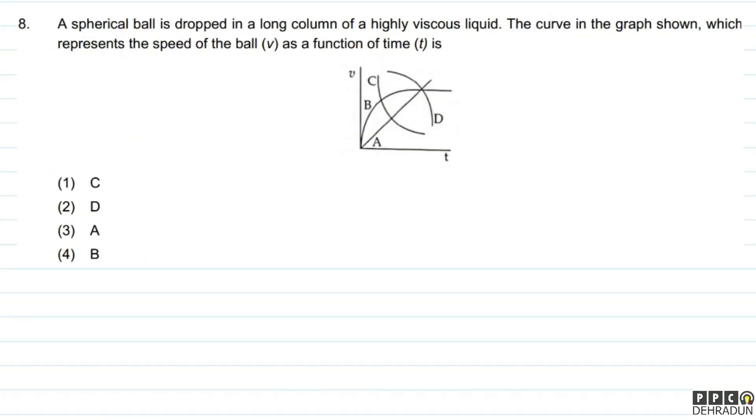Let's have a look at question number 8. The question says, a spherical ball is dropped in a long column of a highly viscous liquid. The curve in the graph shown represents the speed of the ball V as a function of time T.